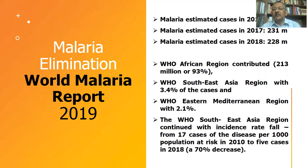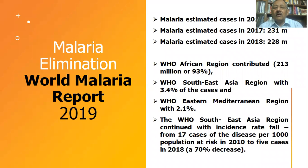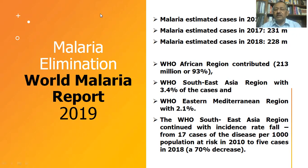Looking at the World Malaria Report, estimated malaria cases in 2010 were 251 million, which reduced to 231 million in 2017, and the same reducing trend continued in 2018 at 228 million as per the World Malaria Report 2019. The African region contributed maximum at 93 percent — that is 213 million cases — whereas the Southeast Asia region contributed only 3.4 percent. The main crux is that India contributes the maximum within Southeast Asia, and the Eastern Mediterranean region contributes 2.1 percent.